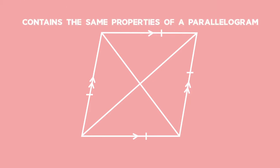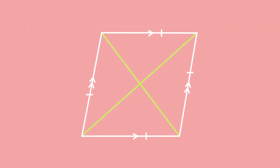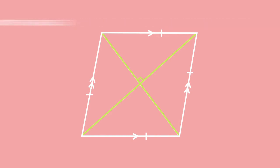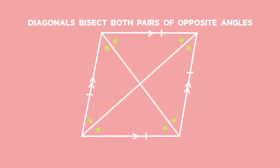That is the same property of a parallelogram. Once again, the diagonals bisect each other, but a special property of a rhombus that is not a property of a parallelogram is that the diagonals bisect each other at 90 degrees. You will also see that the diagonals bisect both pairs of opposite angles, cutting them into two equal angles.